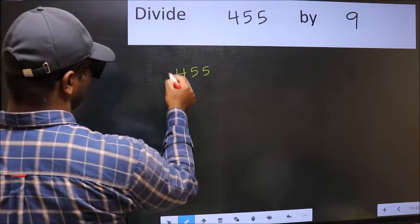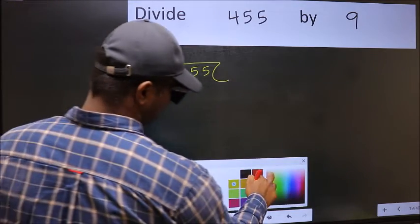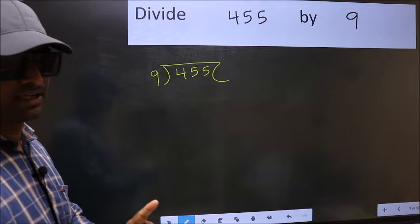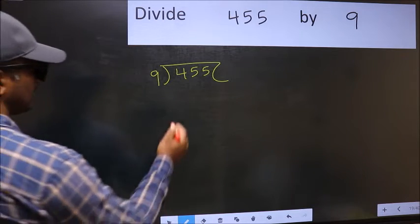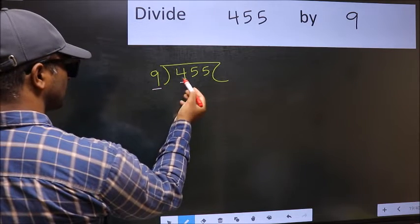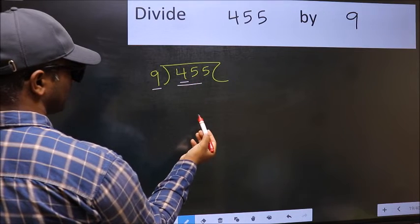455 and 9 here. This is your step 1. Next, here we have 4 and here 9. 4 is smaller than 9, so we should take two numbers, 45.